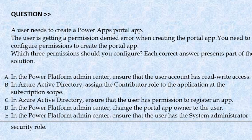Option B: In Azure Active Directory, assign the contributor role to the application at the subscriptions scope. Option C: In Azure Active Directory, ensure that the user has permission to register an app. Option D: In the Power Platform admin center, change the portal app owner to the user. Option E: In the Power Platform admin center, ensure that the user has a system administrator security role. The correct answer is options A, C, and E.